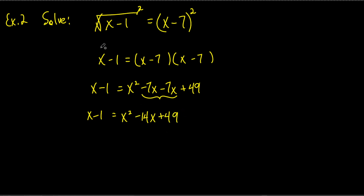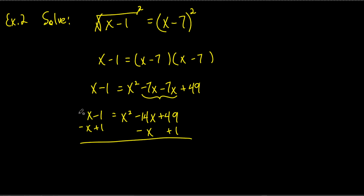Now we've got rid of the square roots. We need x on the same side, so we subtract x from the negative 14x — don't subtract from x squared or 49 since they're not like terms, only subtract from like terms. So negative 14 minus 1 gives negative 15x. Then we add 1 to both sides: 49 plus 1 is 50. So we have 0 equals x squared minus 15x plus 50.